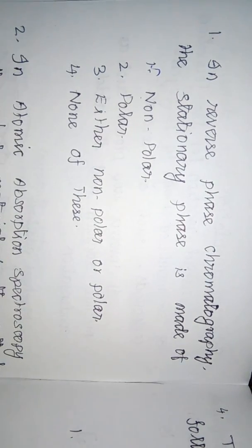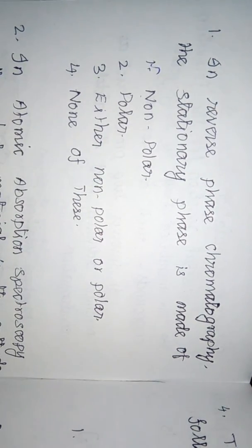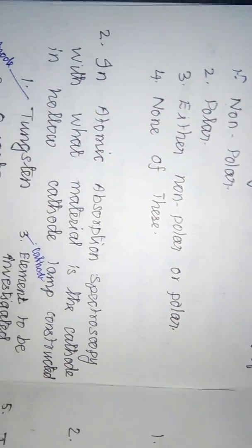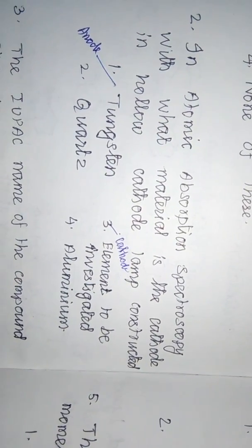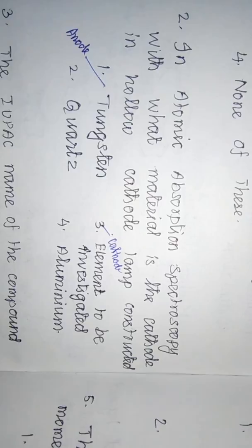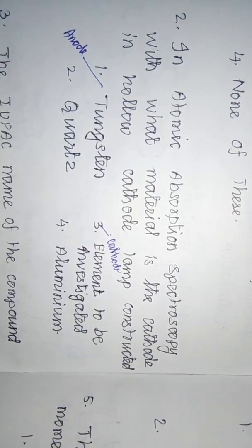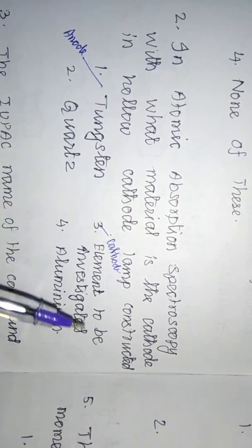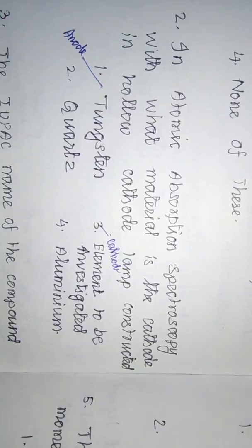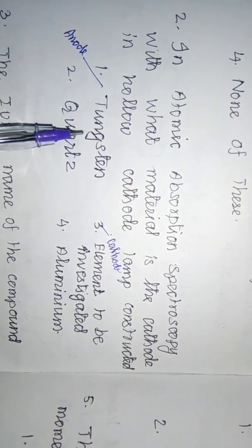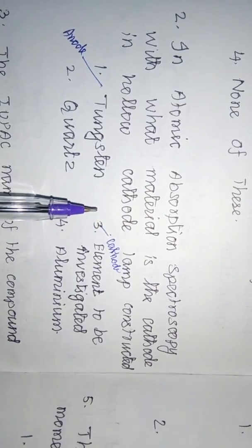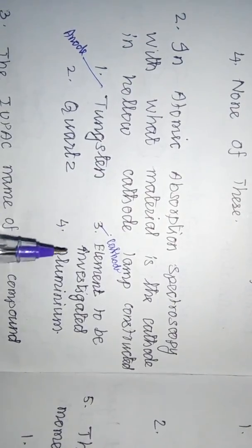The next question is atomic absorption spectroscopy: with what material is the cathode in a hollow cathode lamp made? In atomic absorption spectroscopy, a hollow cathode lamp (HCL) is used. The anode is usually made up of tungsten.